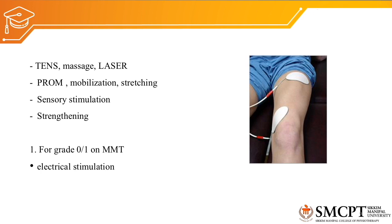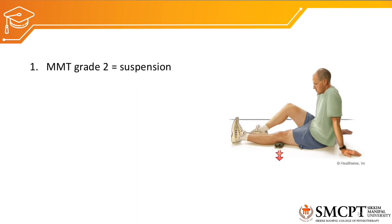Sensory stimulation such as stroking, brushing, and icing can be given to the dermatomal area supplied by the femoral nerve. Strengthening exercises are given according to MMT findings. For MMT grade 0 or 1, electrical stimulation is given to the quadriceps muscle and to the iliopsoas if involved. For MMT grade 2, suspension therapy is used with the patient in side lying, with the lower limb below the knee supported on a sling, and the patient performs knee extension from a flexed position.